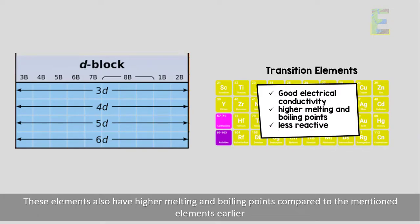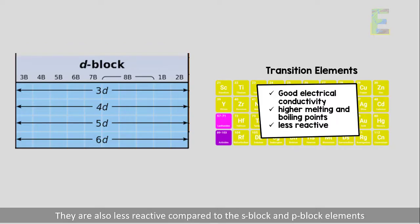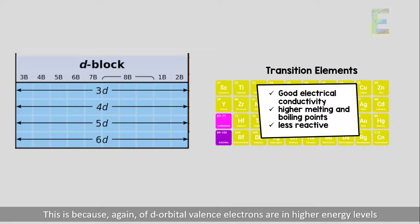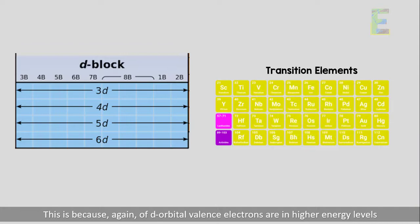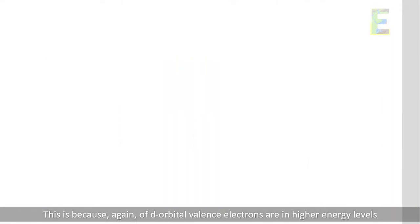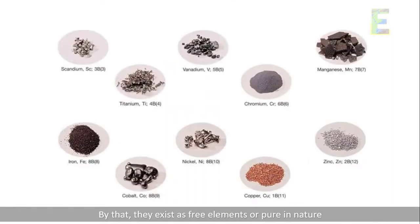These elements also have higher melting and boiling points compared to the previously mentioned elements. They are also less reactive compared to the S block and P block elements. This is because the D orbital valence electrons are in higher energy levels, and by that they exist as free elements or pure in nature.